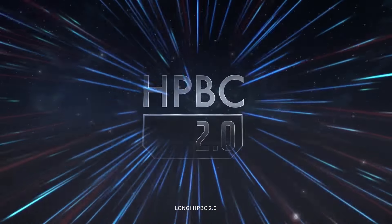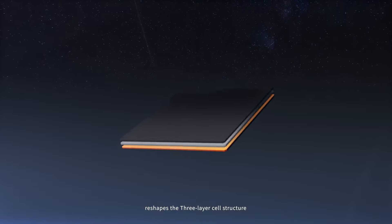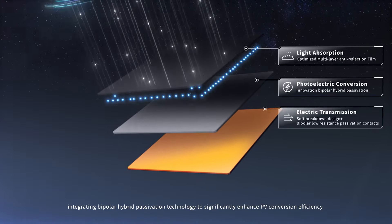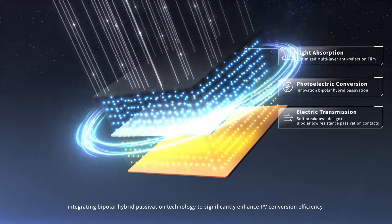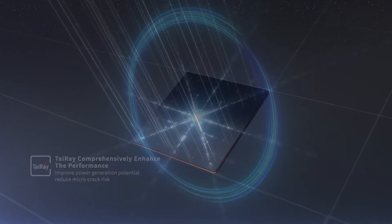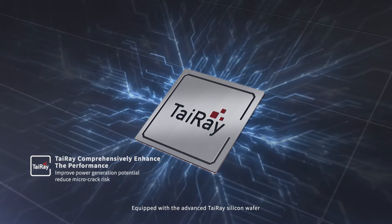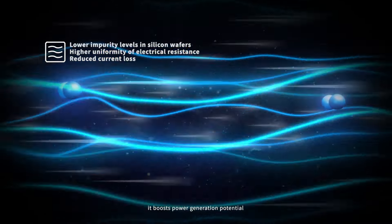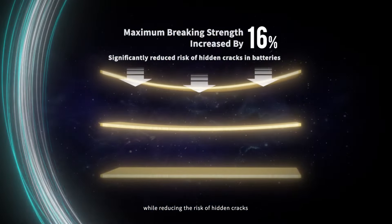Longgee HPBC 2.0 reshapes the three-layer cell structure, integrating bipolar hybrid acidation technology to significantly enhance PV conversion efficiency. Equipped with the advanced high-ray silicon wafer, it boosts power generation potential while reducing the risk of hidden cracks.